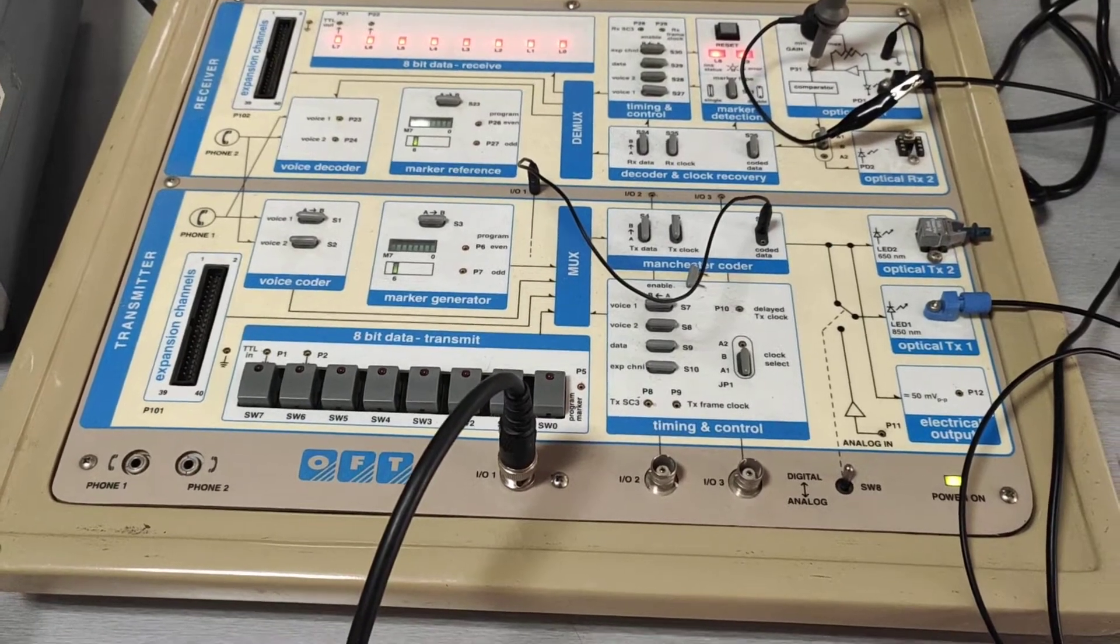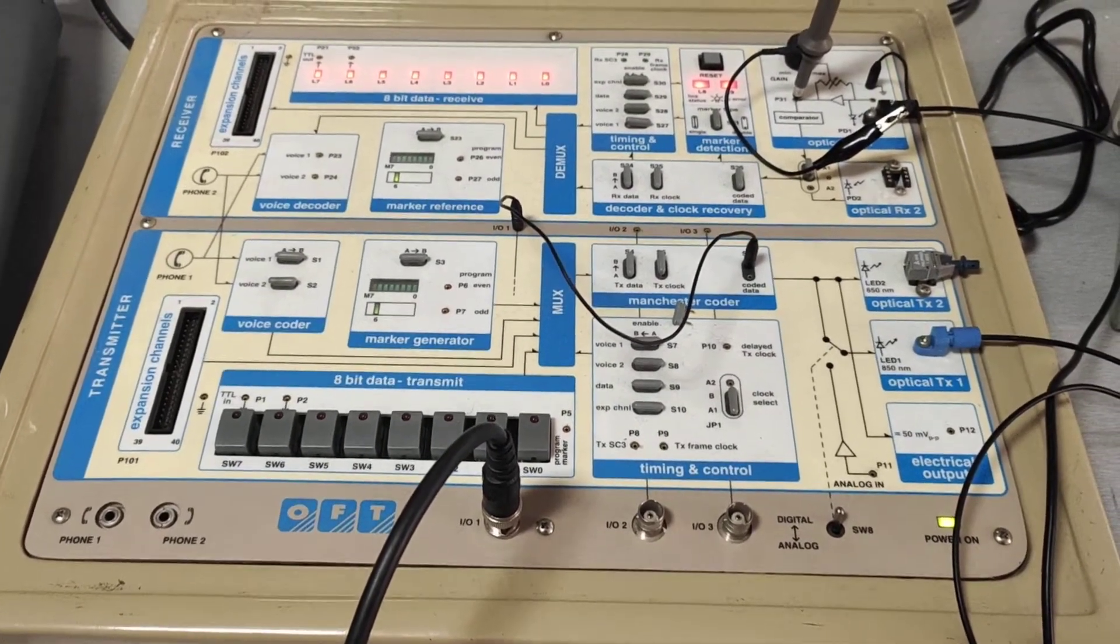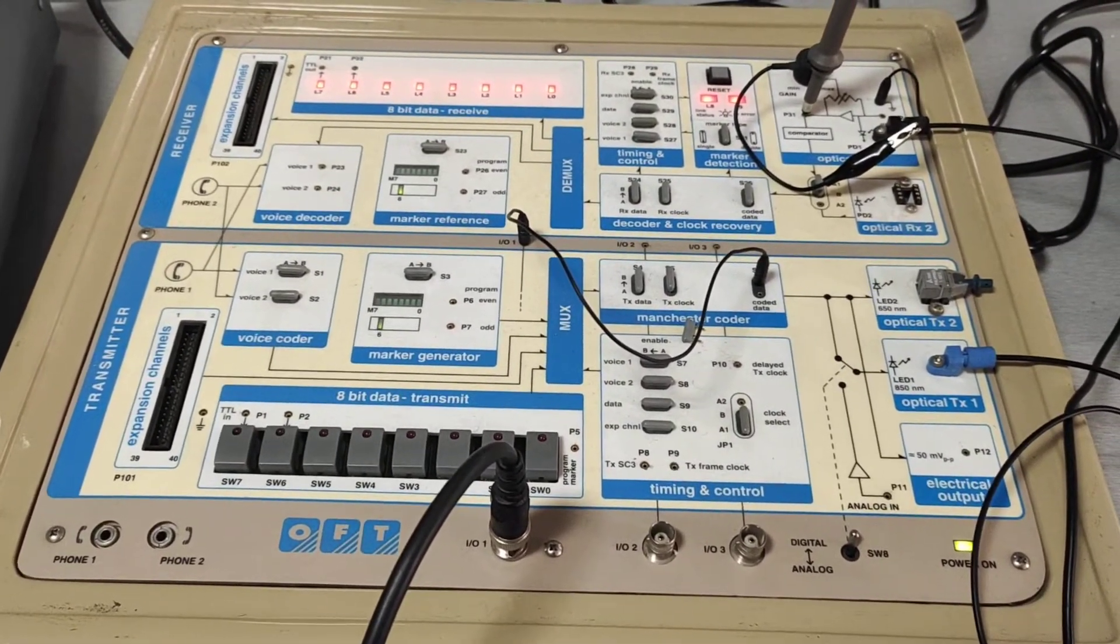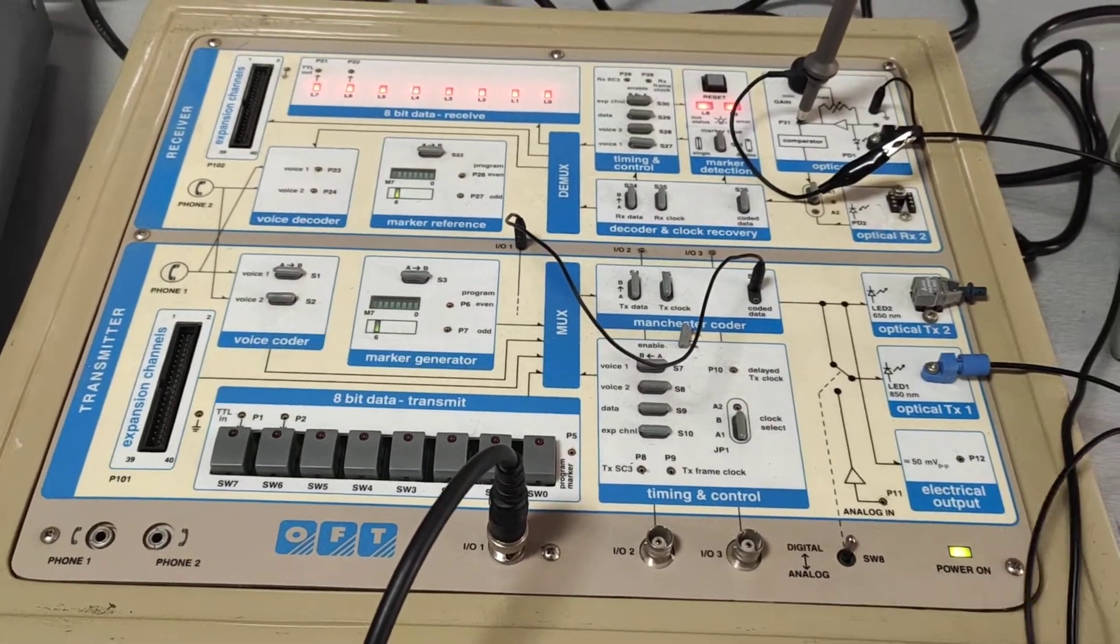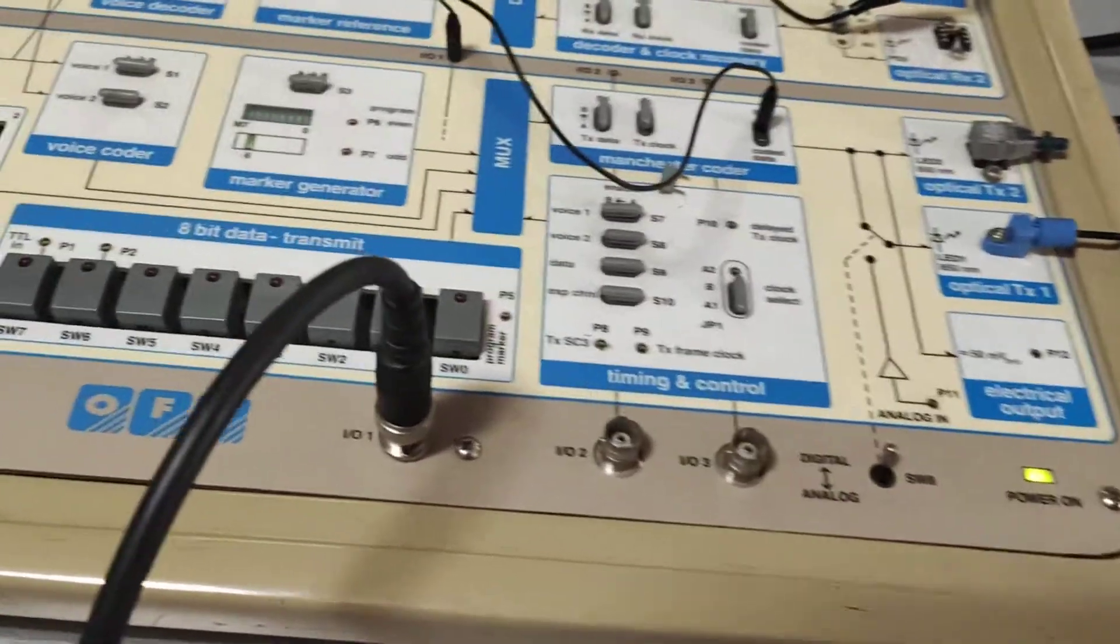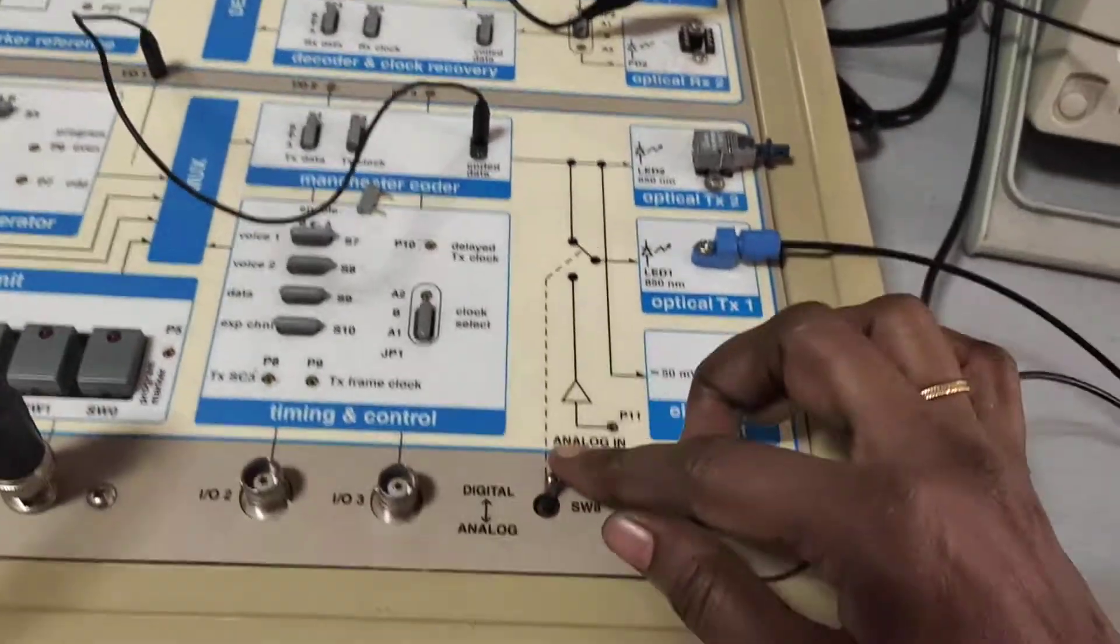As the continuation of the previous video, I will explain how to set up Digital Communication Link using Fiber Optic. Here, we keep the switch position in the digital.